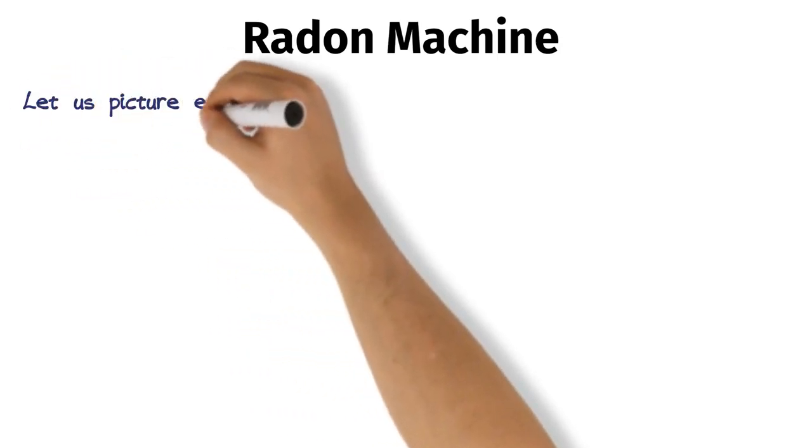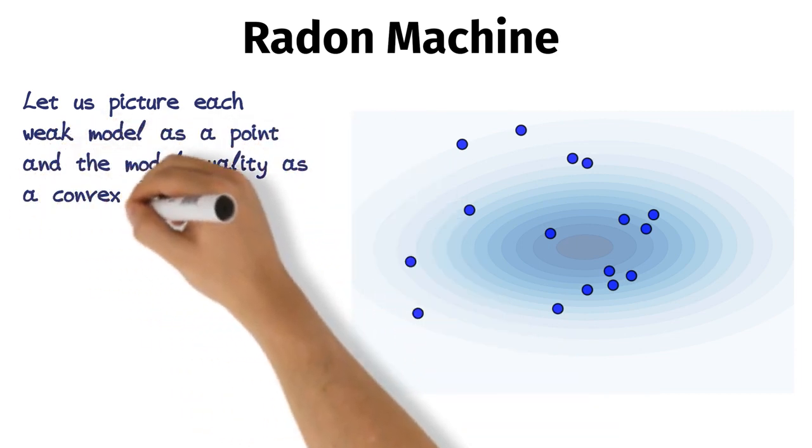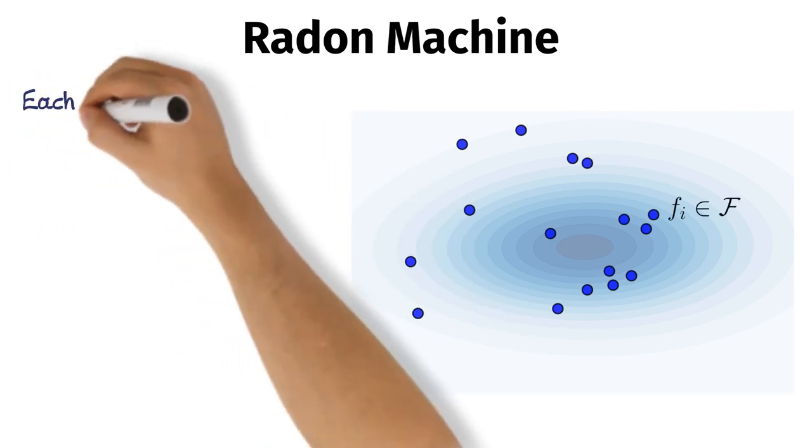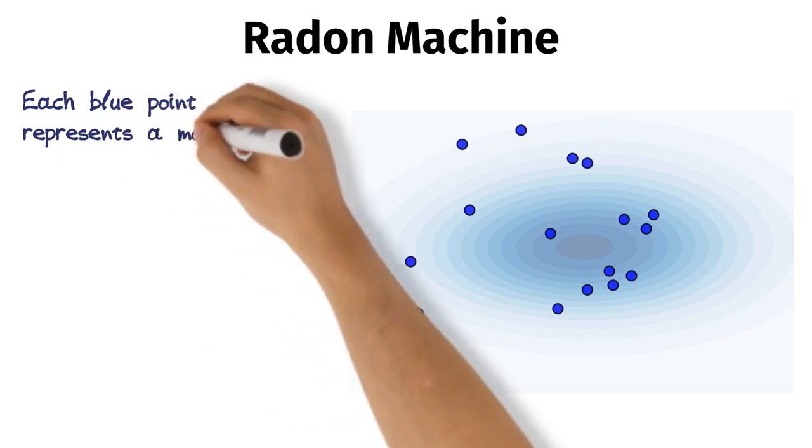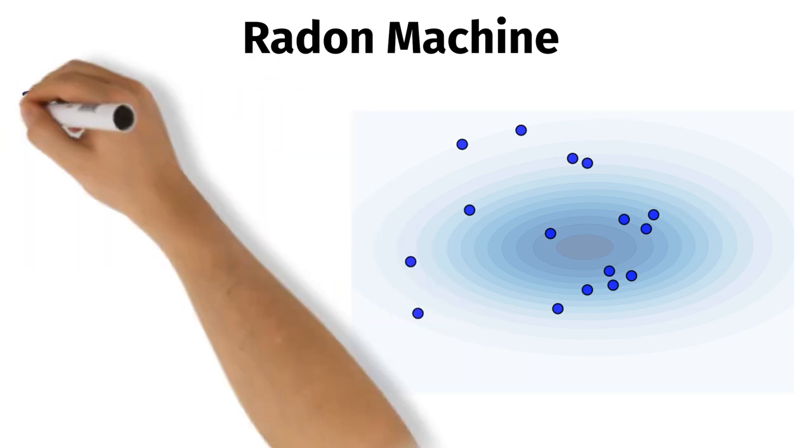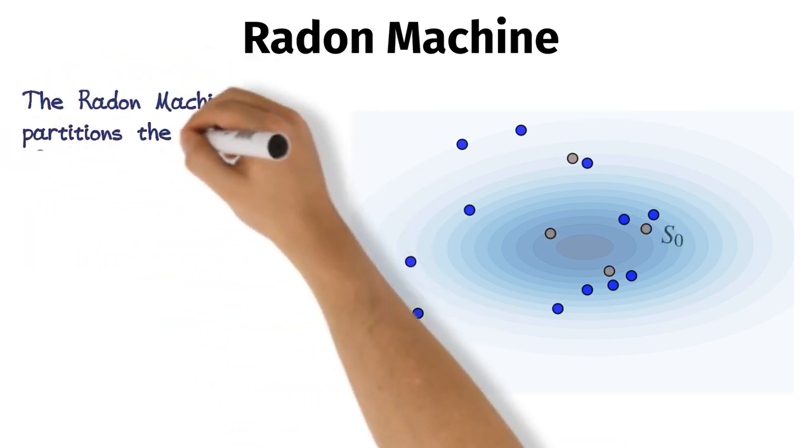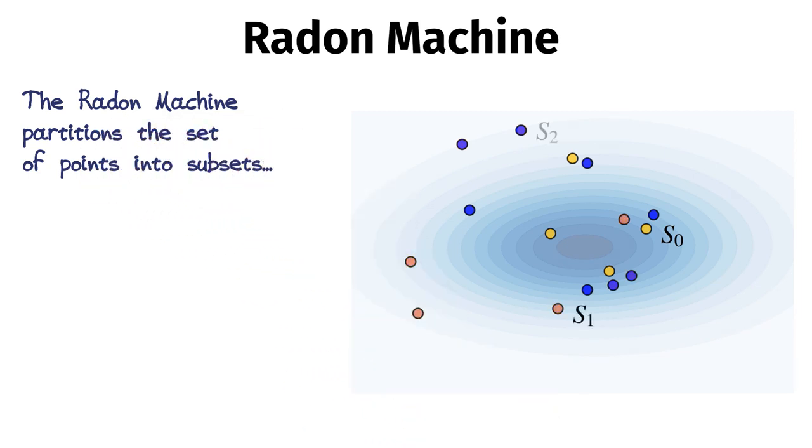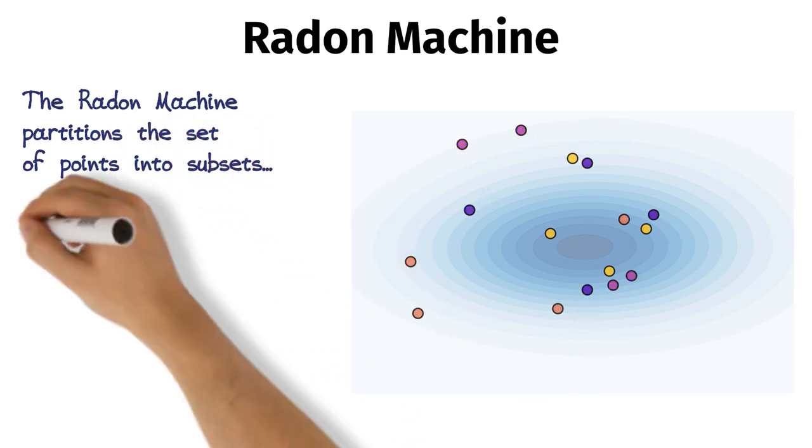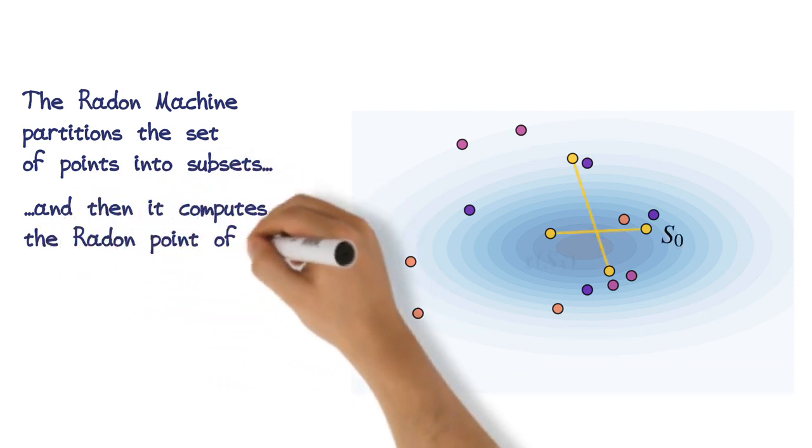Let us picture each weak model as a point and the model quality as a convex function. Each blue point represents a model. The Radon machine partitions the set of points into subsets and then computes the Radon point of each subset.